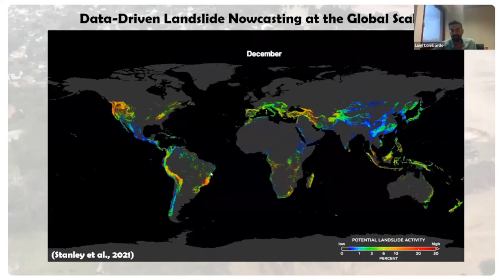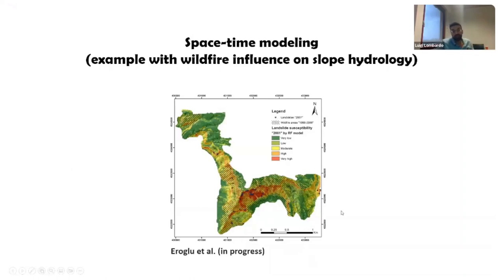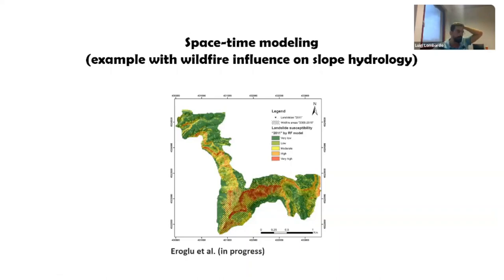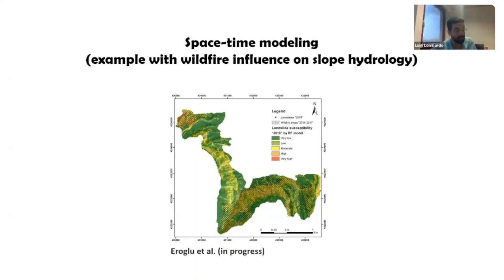When I talk about space-time here, the resolution is just one kilometer. Here at ITC, this is work by Janur Arolu, a student who will graduate in a month. She tried to build a space-time model — one that knows how the landscape is characterized (geology, slope, aspect) together with temporally dynamic characteristics such as wildfire occurrences, because wildfire changes soil hydrology quite drastically, as well as the rainfall pattern.